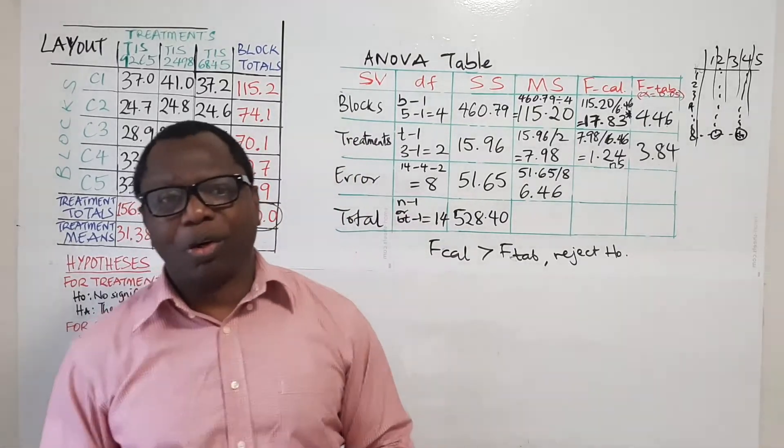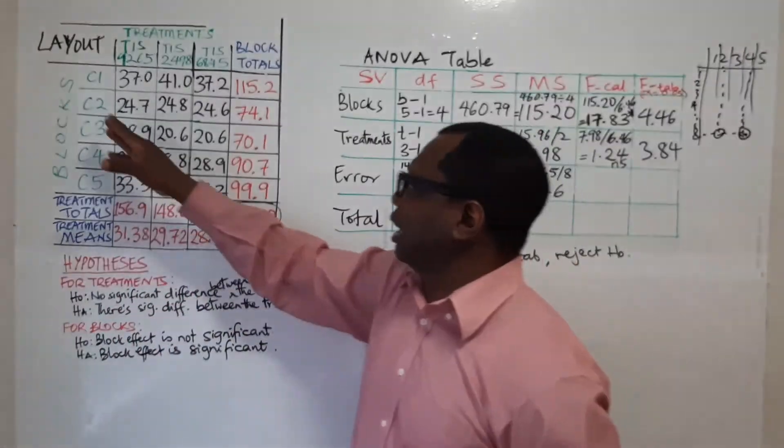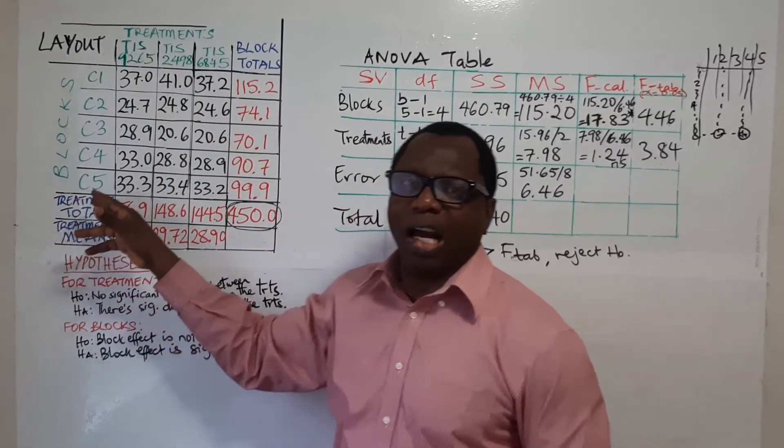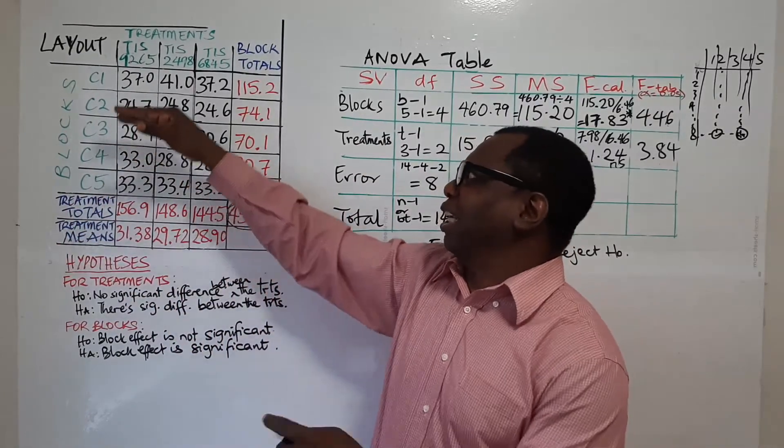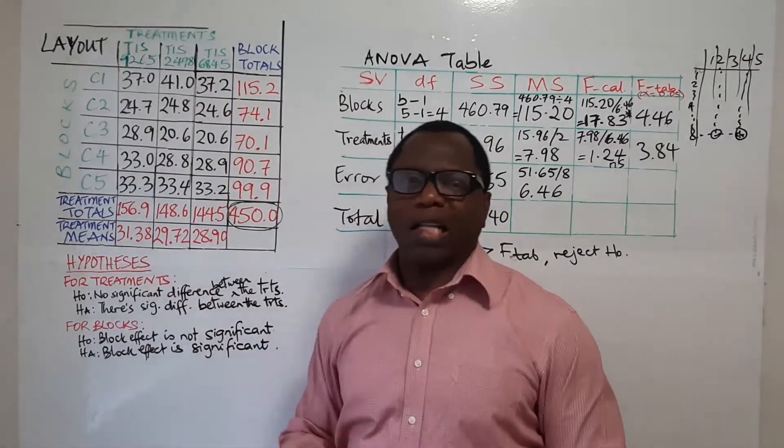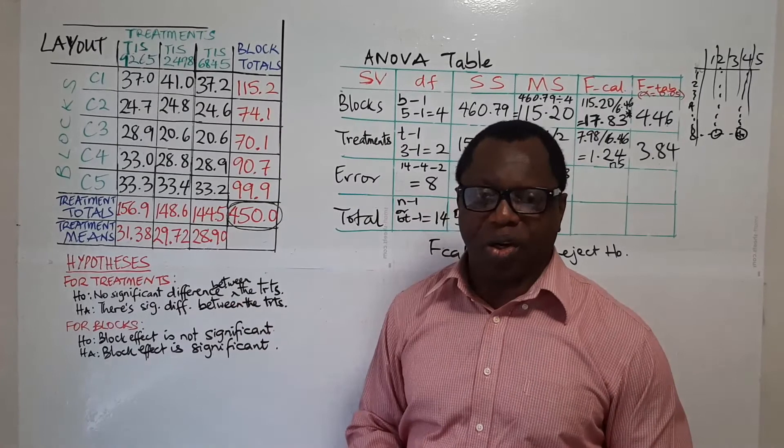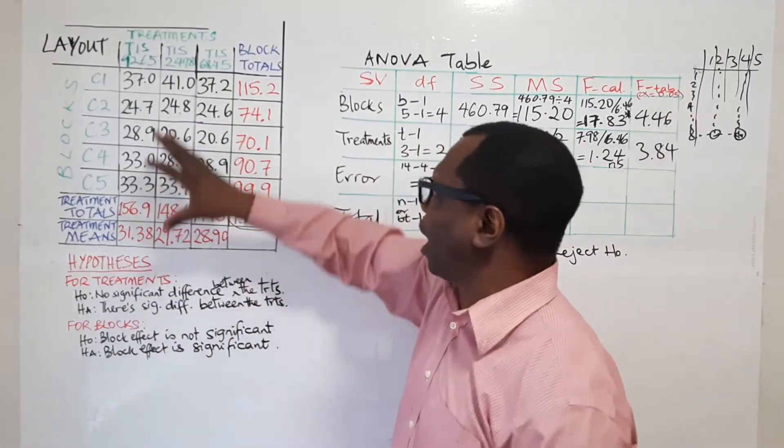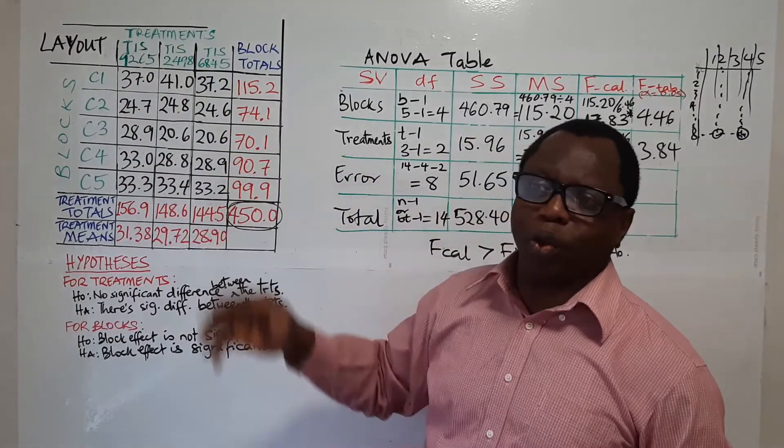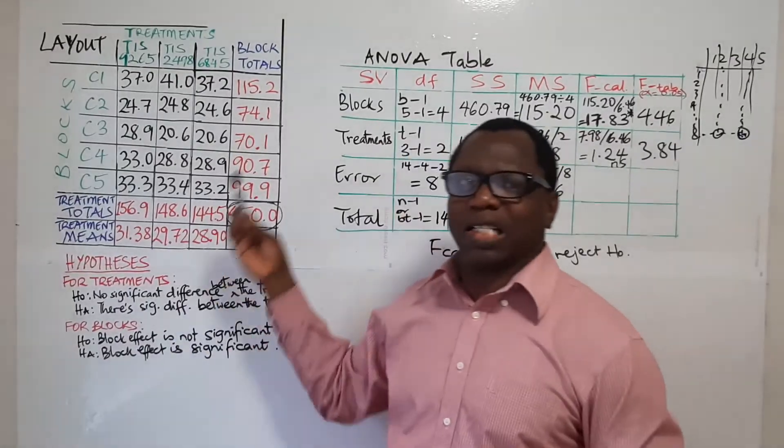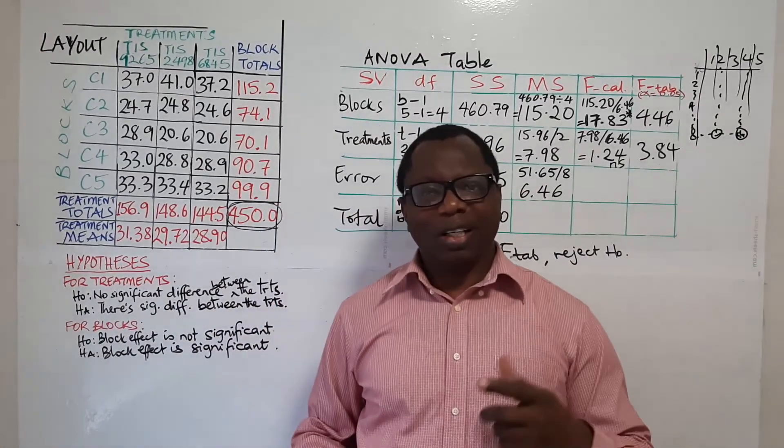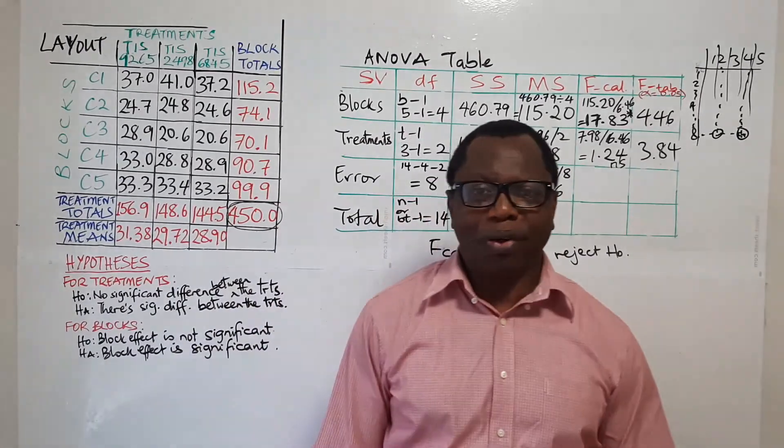In the next video, we'll be looking at a situation where instead of differences in experimental units in one direction, how about if we have it in multiple directions, that is in two perpendicular directions. We'll look at that when we discuss Latin square design. But situations where, when we have a table like this, if some of the values here are missing, how do we resolve the situation and still solve the problem? That will be treated under the video on missing values. Thank you for dropping by. See you in the next video. Bye.